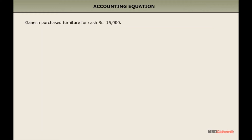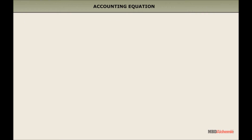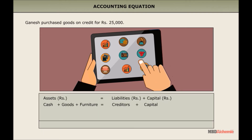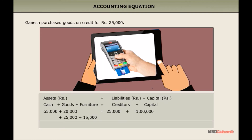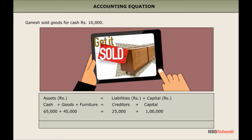Transaction 3: Ganesh purchased goods on credit for 25,000 rupees. This transaction increased goods by 25,000 rupees and added creditors on the liabilities side by the same amount. Transaction 5: Ganesh sold goods for cash 10,000 rupees. This transaction decreased goods by 10,000 rupees and increased cash by the same amount.